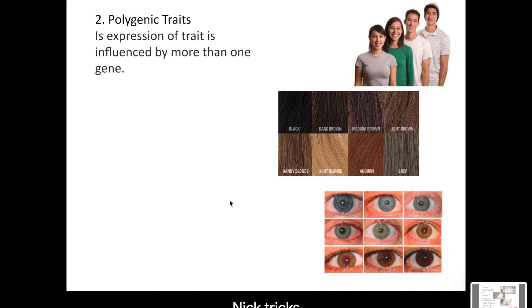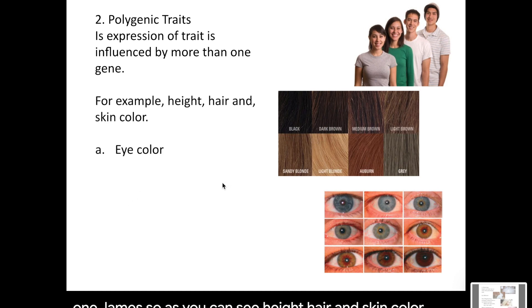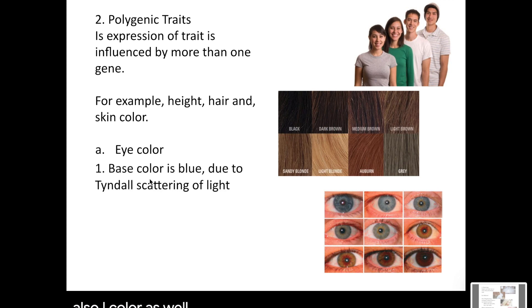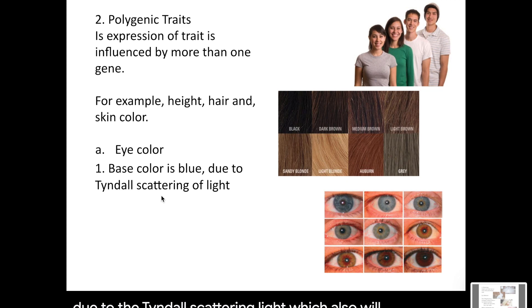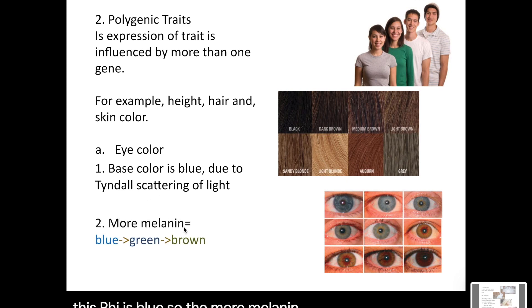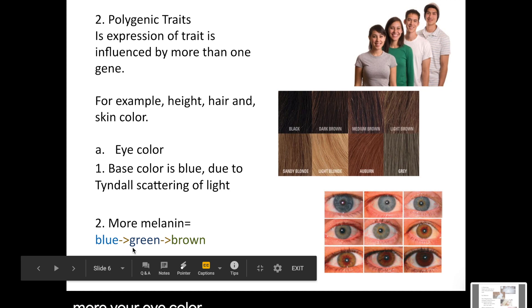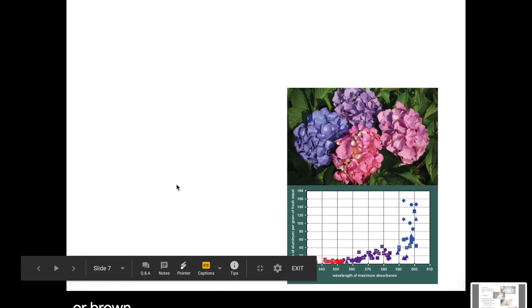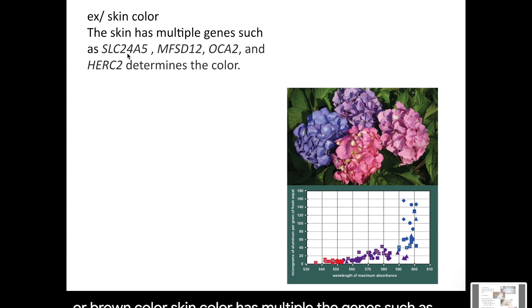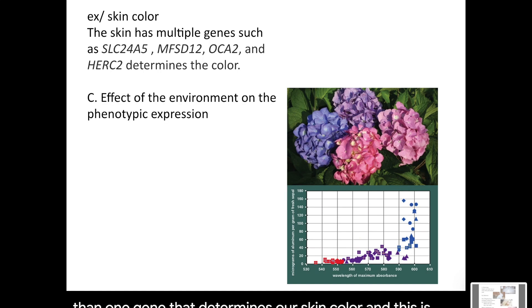Polygenic traits are the expression of a trait influenced by more than one gene. Examples include height, hair, skin color, and eye color. For eye color, the base is blue due to how light is gathered, and the more melanin protein you have, the darker your eye color becomes — going from blue to green to hazel or brown. Skin color is determined by multiple genes such as SLC24A5, MFSD12, OCA2, and HERC2. This is why we have such a wide variety of skin colors expressed.